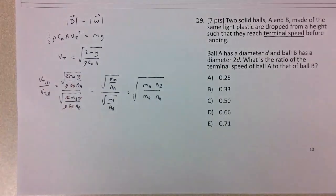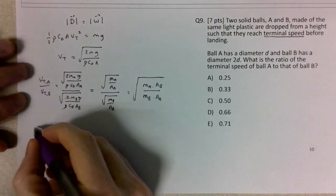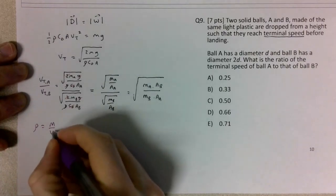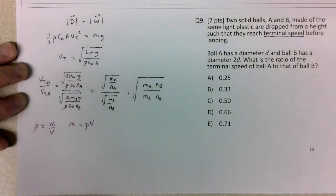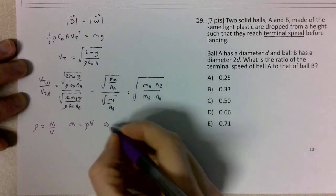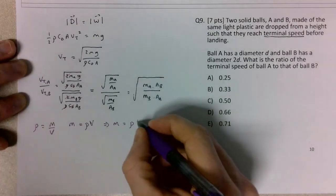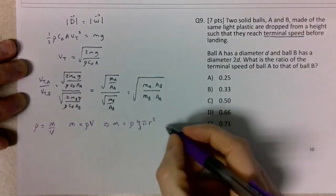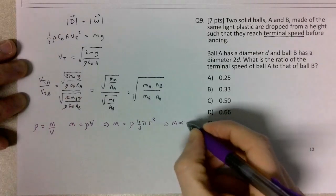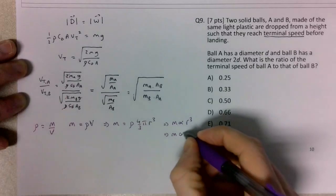To get the mass, we consider the density. They're both made of the same plastic, so density equals mass over volume. The mass equals ρ times V, which for a sphere is ρ times 4/3 π r³. So the mass is proportional to r³, which also means mass is proportional to d³.